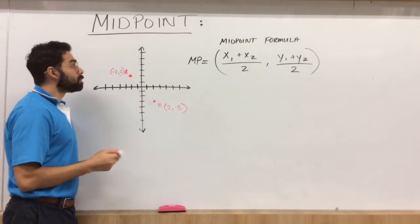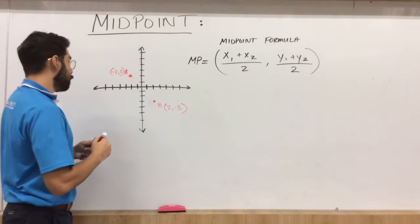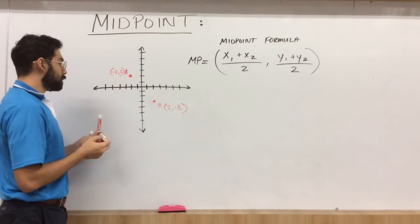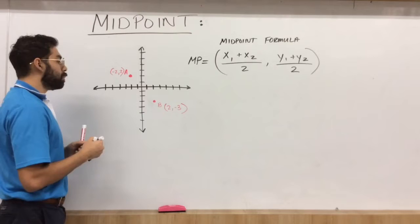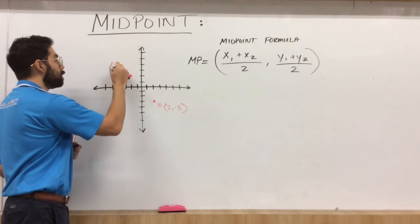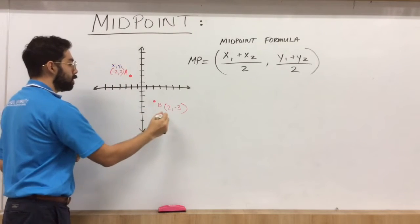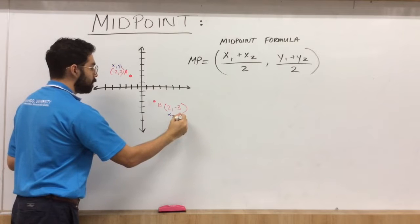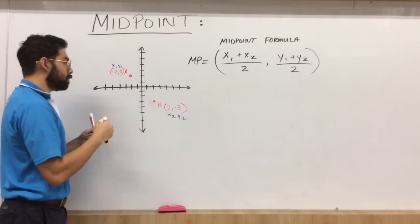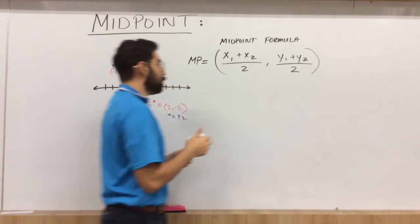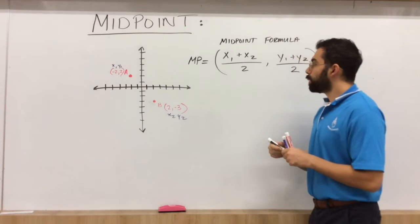So with that being said we can go ahead and solve for the midpoint for these ordered pairs. If you feel it's a little bit uncomfortable when it comes to what you need to put in, you can certainly label those ordered pairs.